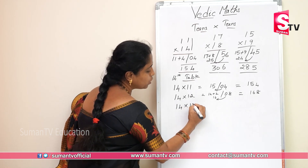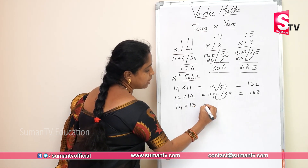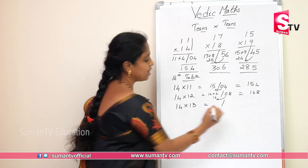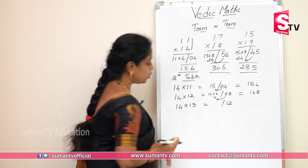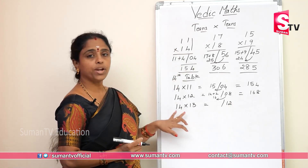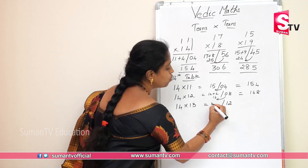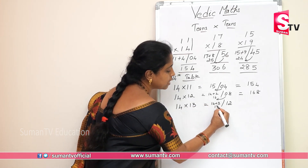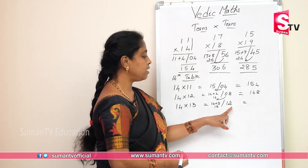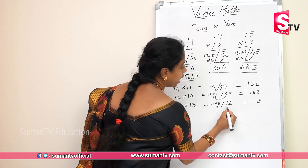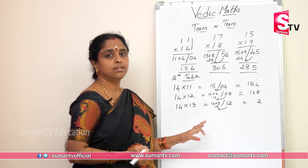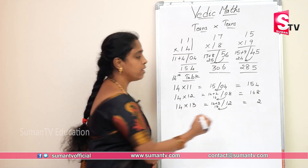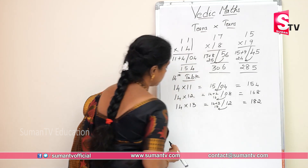14 into 13. 3 fours are 12. 14 plus 3 — you will be getting 17. Write 2 here, carry over this 1 to 17. 17 plus 1 — we will be getting 18. So 14 into 13 is 182.